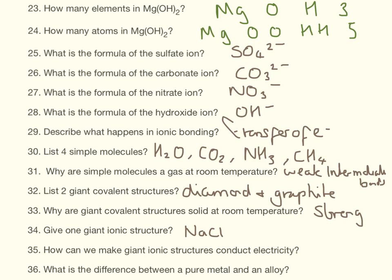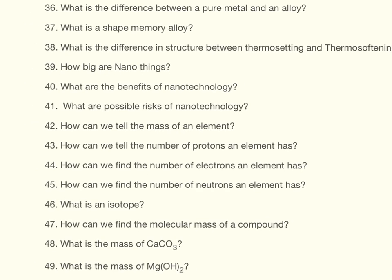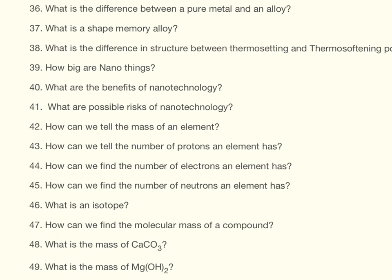How can we make giant ionic structures conduct electricity? They need to be dissolved or molten. What is the difference between a pure metal and an alloy? A pure metal has layers so they can slide, and an alloy has no layers so they can't slide.